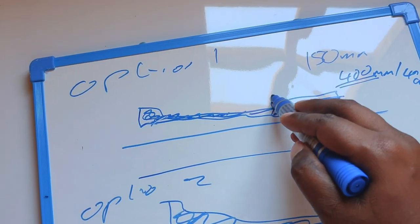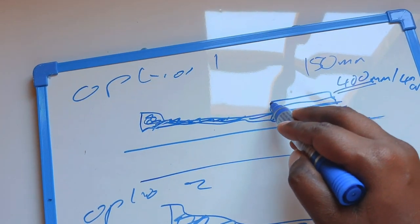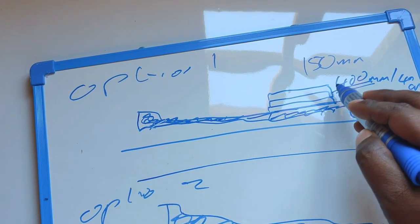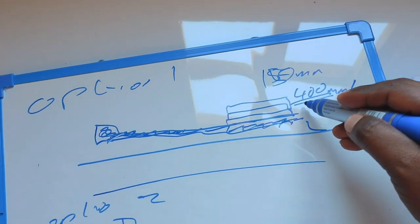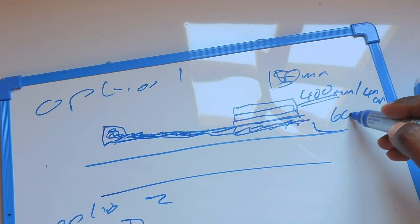Then you cut again, compact up to 150 millimeters. You keep going up by 150 until you reach your desired height. It could have been maybe 600.